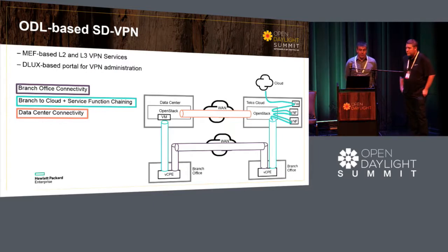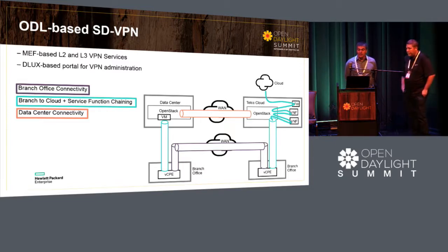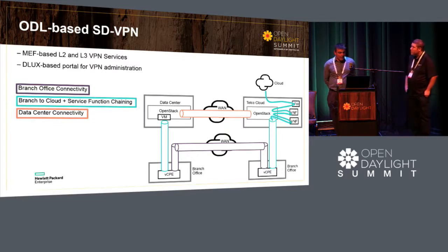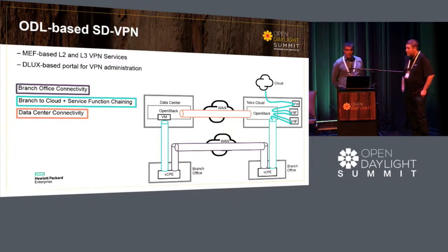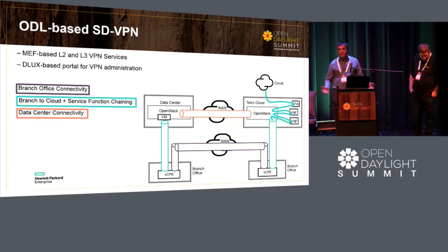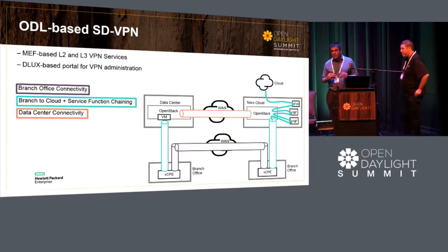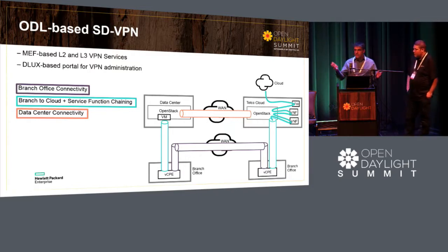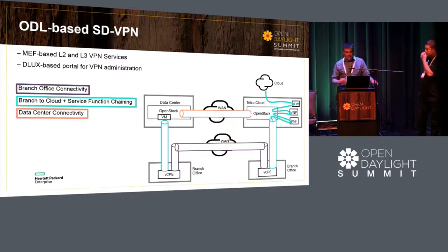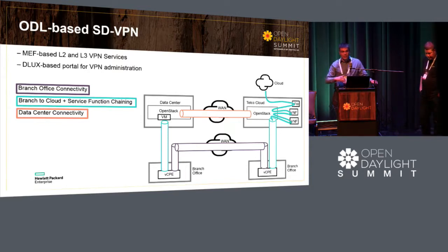The API we chose is a MEF-based API to be more standard, supporting Layer 2 and Layer 3 VPN service with regular Deluxe-based VPN administration. The connectivity can happen from a branch office, branch to branch, or branch to cloud. A branch can be a small home office, a couple of employees, or it can be your centralized headquarters. We see communication happening between different locations, with direct paths between them.